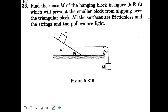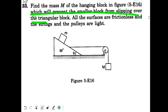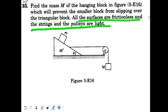Okay, now here's question number 33 from chapter number 5 of H.C. Verma. Find the mass M of the hanging block in the figure which will prevent the smaller block from slipping over the triangular block. All the surfaces are frictionless and the strings and the pulleys are light.